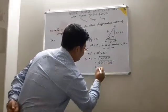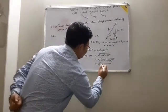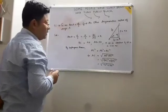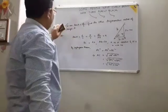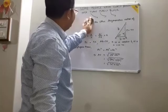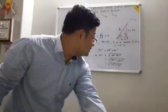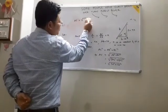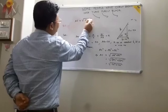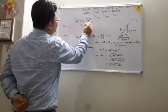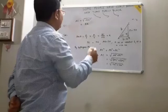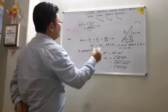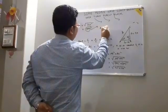AC equals root over of 9K squared plus 16K squared, which equals root over of 25K squared. So AC equals 5K — we take the positive value. The hypotenuse equals 5K.